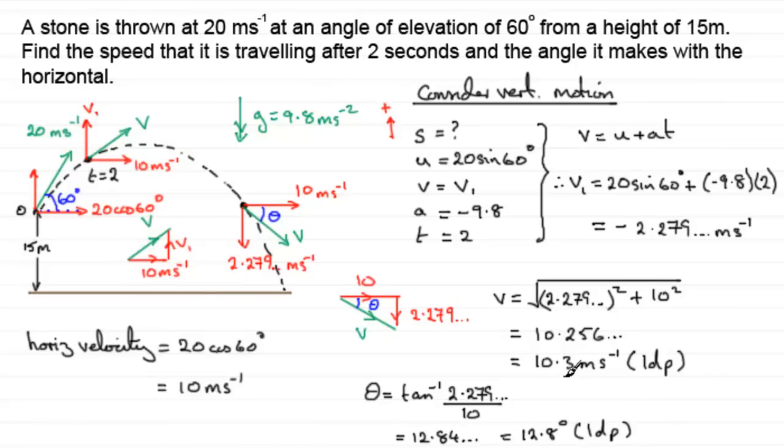So, we have our speed, 10.3 meters per second. And we have the angle that it makes with the downward horizontal, 12.8 degrees. So, I hope that's given you some idea how you can go about working out problems like this. As I say, I'd always put the particle on the side that you're going to have as the positive sense. It just makes the mathematics easier to work with. And then, whatever you work out, interpret your answer and you'll be able to detect whether it's on the upward part or the downward part of the trajectory.